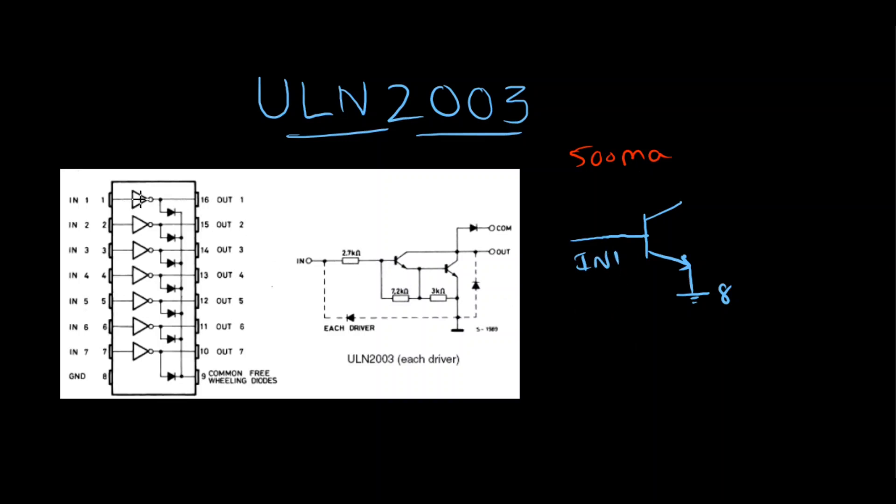Let's take the first driver as an example. IN1 is the input of the first driver. That goes to the base of the transistor and the collector of the transistor is OUT1. For the sake of simplicity, I'm just simplifying this entire circuit as a simple transistor. By doing this, it's very easy for you to understand how to make connections to this particular IC.